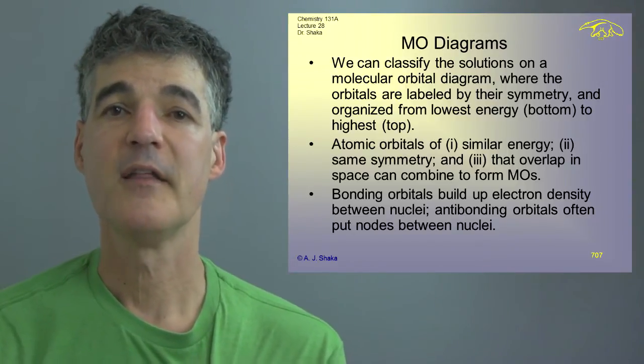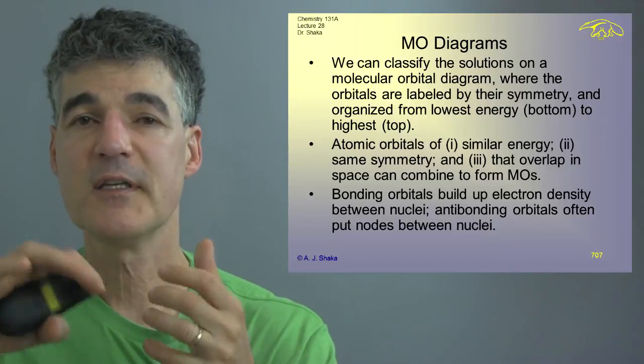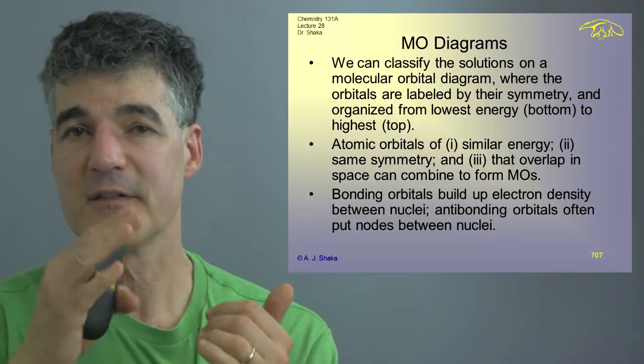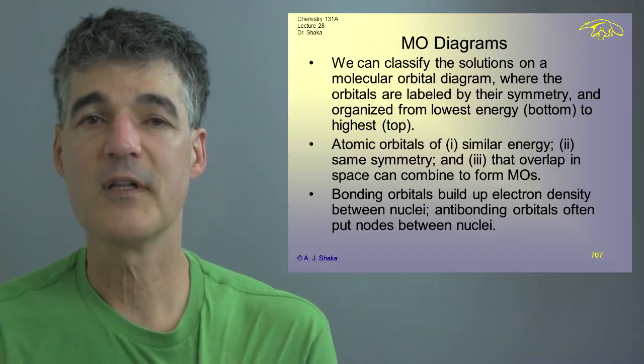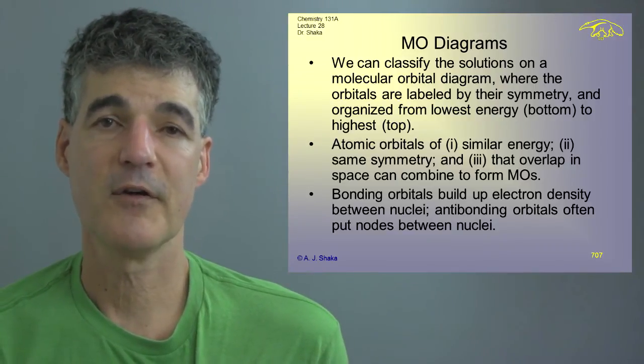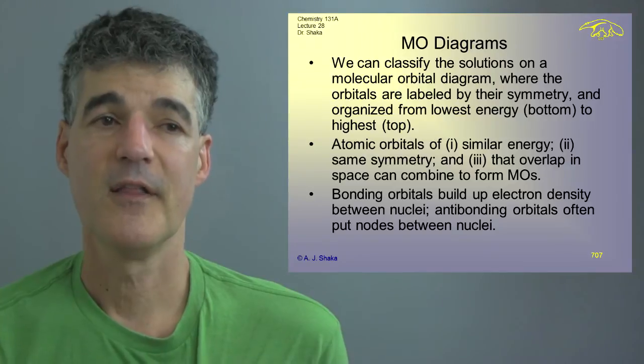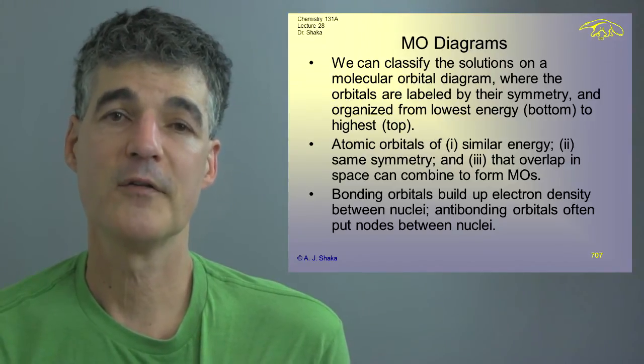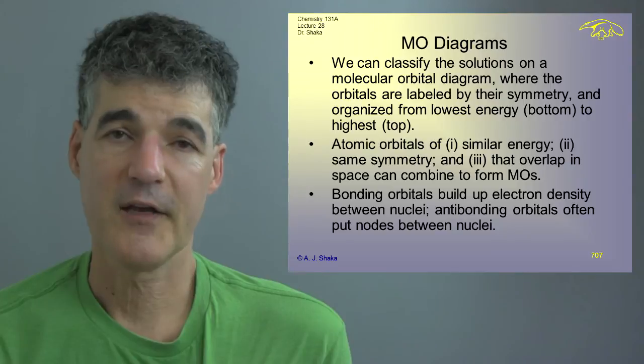And then we found we could classify our solutions by symmetry and the lowest energy usually has the fewest nodes. And then as we go up, things start increasing nodes, things going to zero in between the nuclei and very unfavorable things. And those are configurations of the electrons that are unstable for the molecules, so that's how the molecule can dissociate.